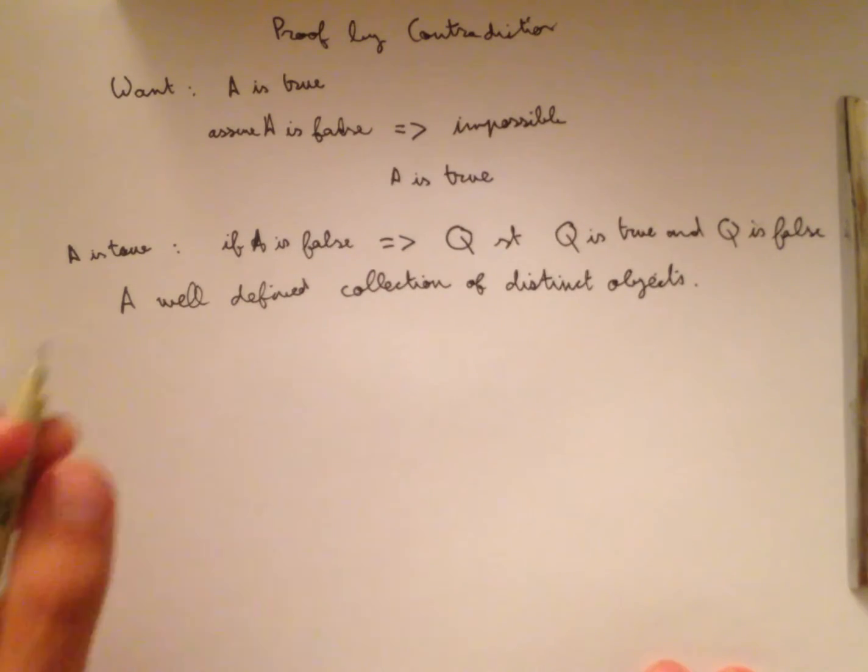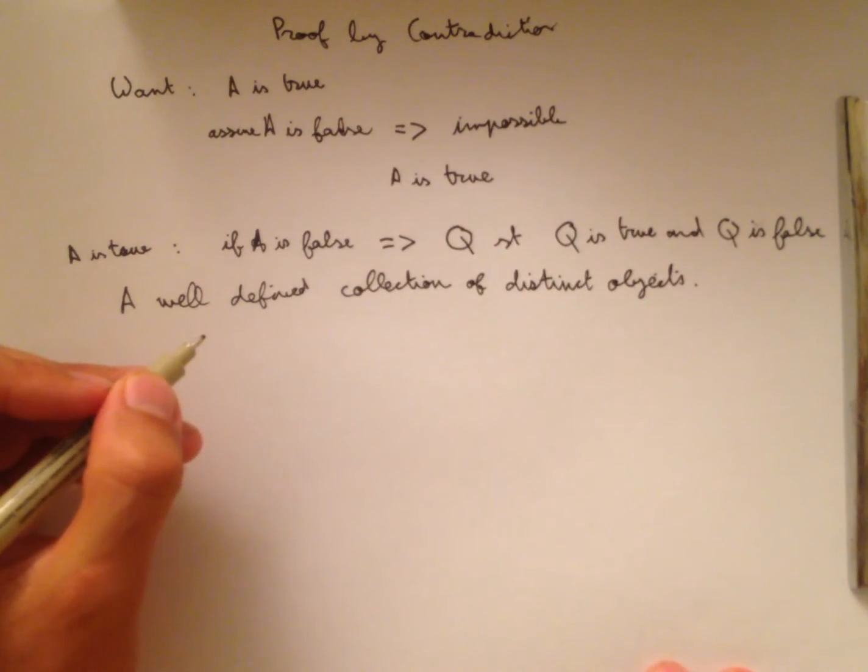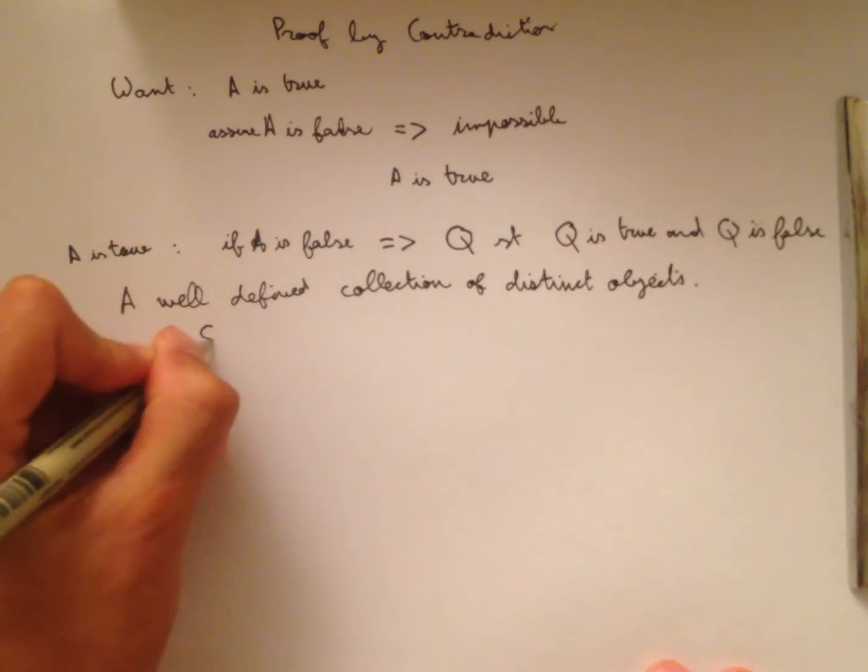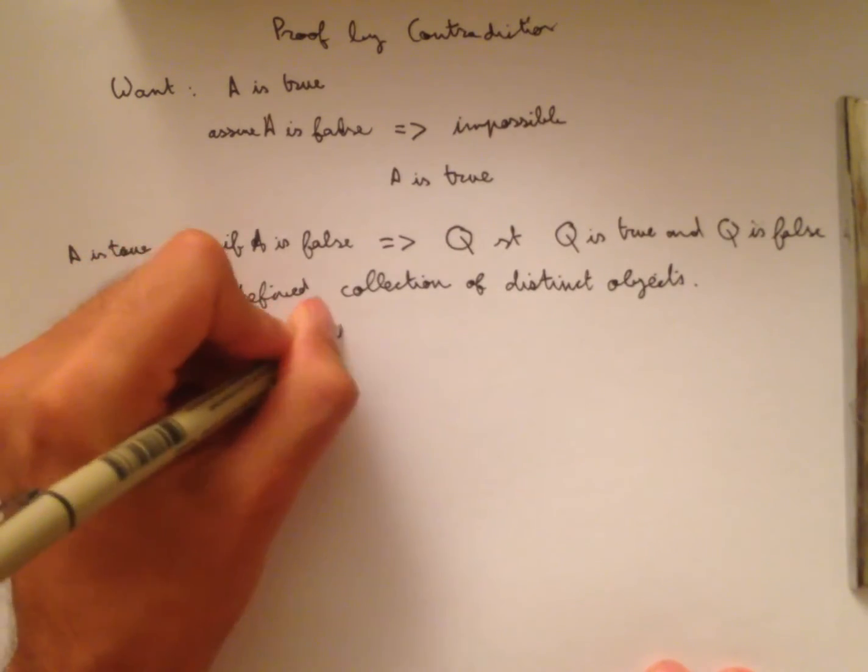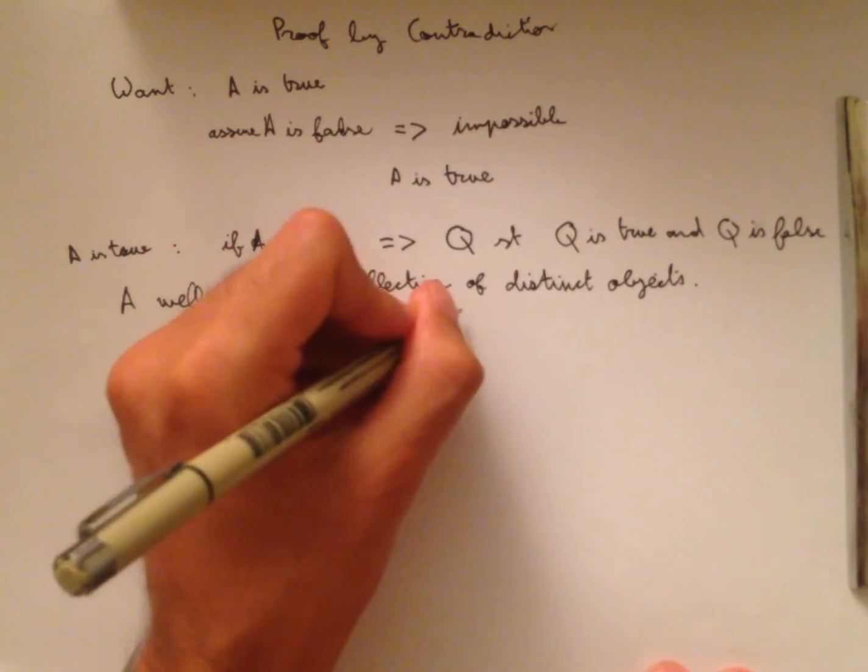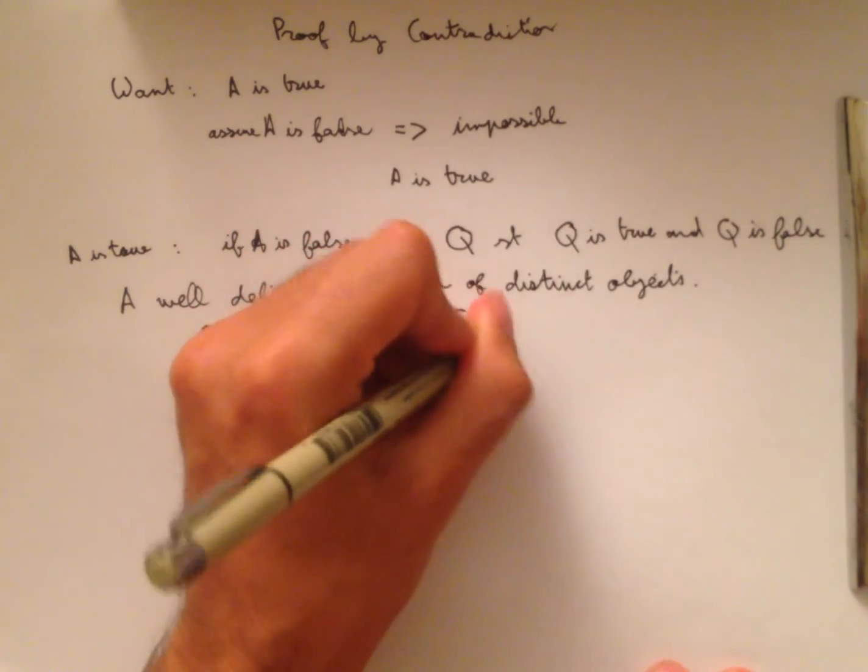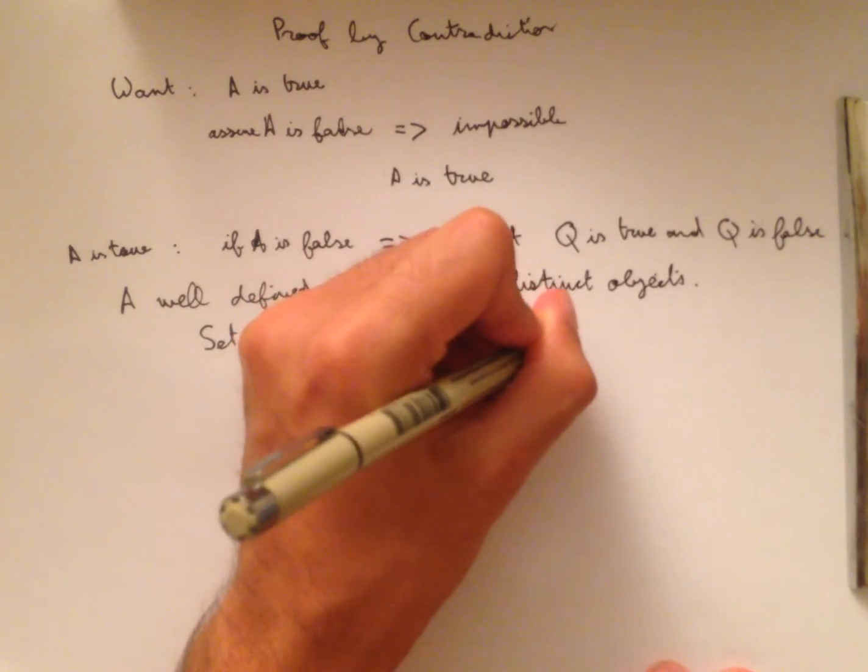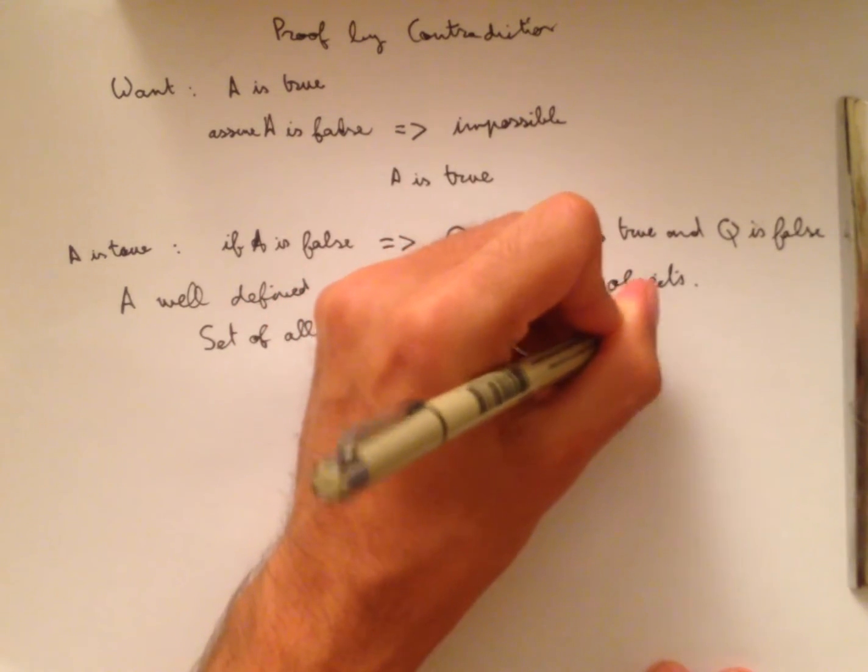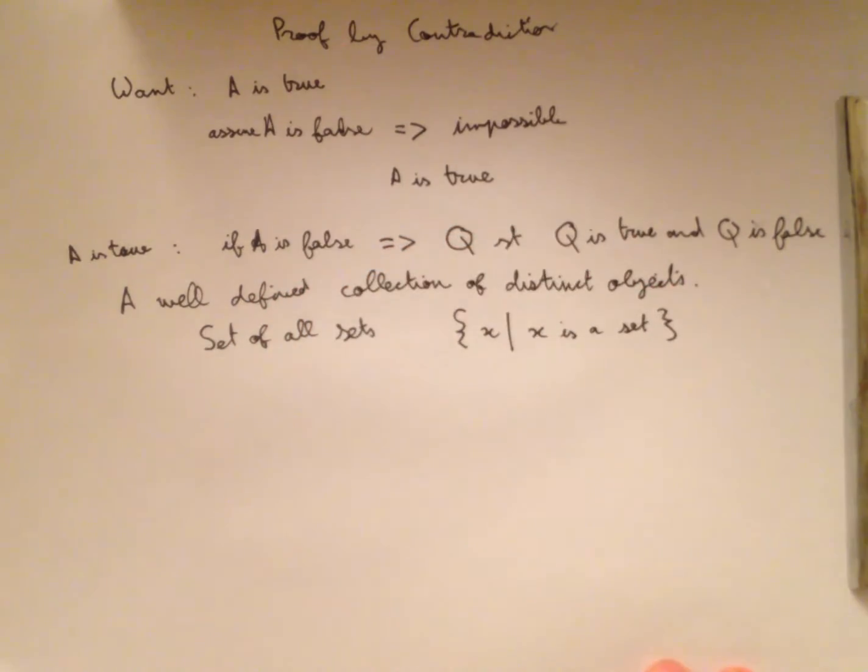So let's look at some pathological sets now. The first one is going to be the set of all sets, or in set builder notation, the set of all x such that x is a set. Now this is a really big set. Another thing about this set is that it contains itself, which is kind of strange.